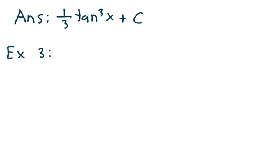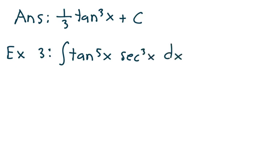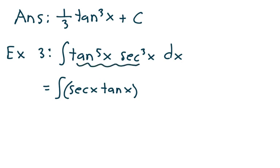Let's take a look at example 3. Suppose I have the integral of tangent to the fifth x times secant cubed x dx. My gut reaction when I see something like this is to pick off a secant x tangent x off of this integrand. That leaves four of the tangents, so I write this as tangent to the fourth x times secant squared x dx.